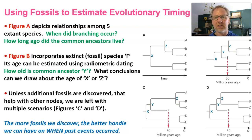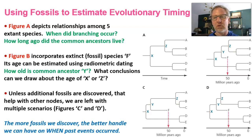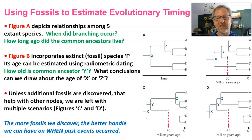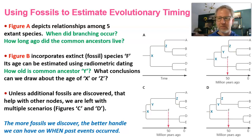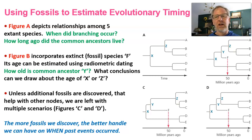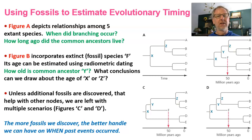Figures C and D show two possibilities for the age of nodes X and Z — we can't know with the evidence at hand whether node Z is young or really old. We need more fossils related to the other species to figure that out. So the more fossils we have to incorporate into a phylogeny, the better handle we have on when past events occurred.